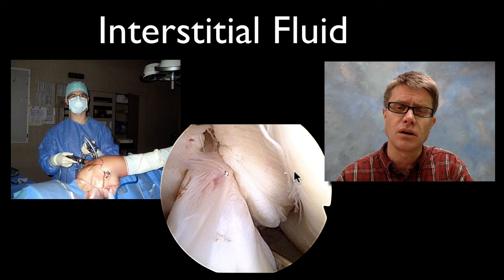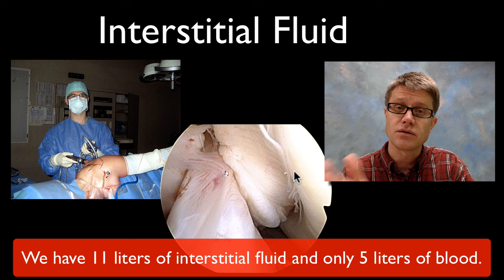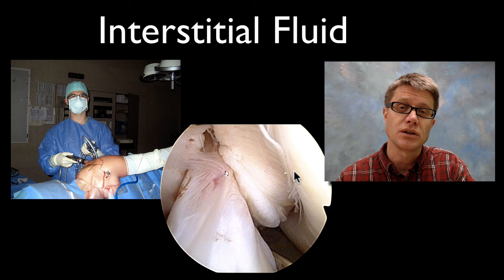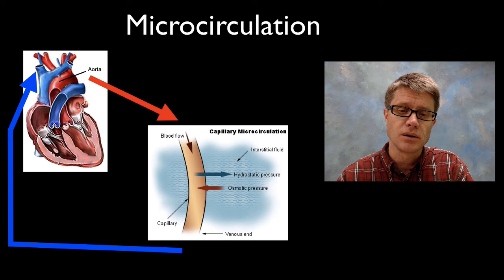Interstitial fluid is really what separates all of our cells from the circulatory system. Since we have a closed circulatory system, the blood is maintained within the vessels the whole way around the loop. But how does material get out of the blood and into our cells? It goes through the interstitial fluid — it's a fluid on the inside of our body that surrounds all the cells. There's also microcirculation that takes place at the level of the capillary.